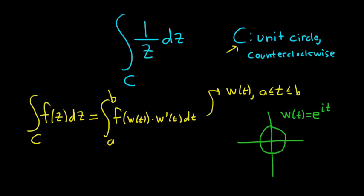And t here runs from 0 to 2π. So this is 0 here, this is π over 2, this is π, this is 3π over 2. Any point on the unit circle can be given by e to the it.